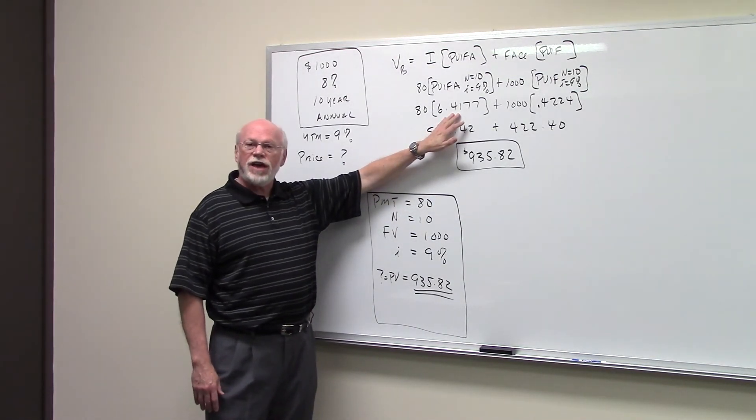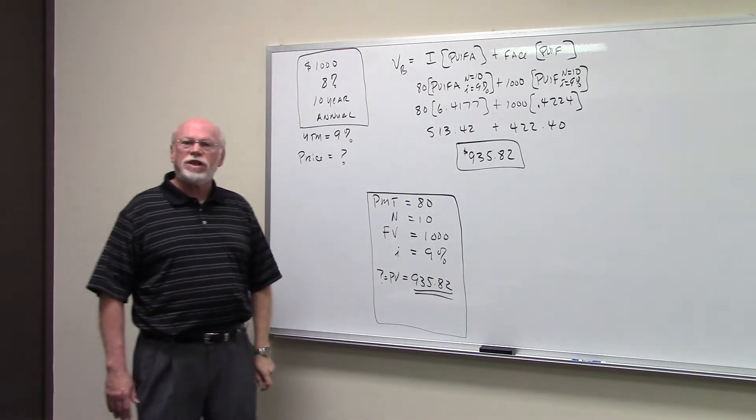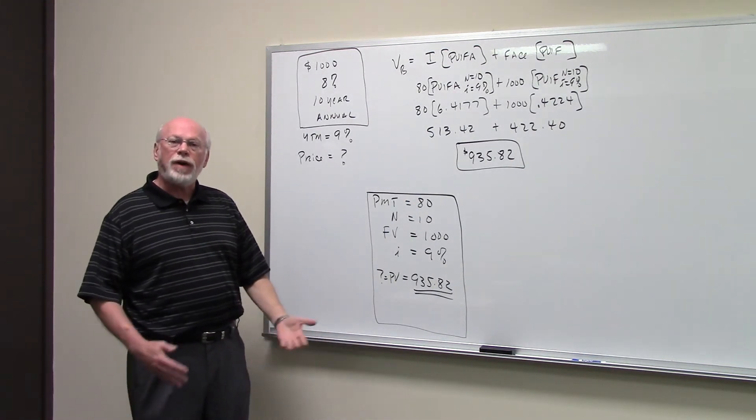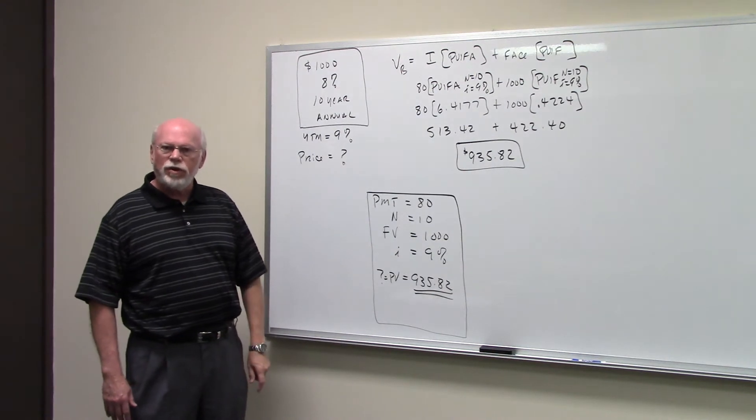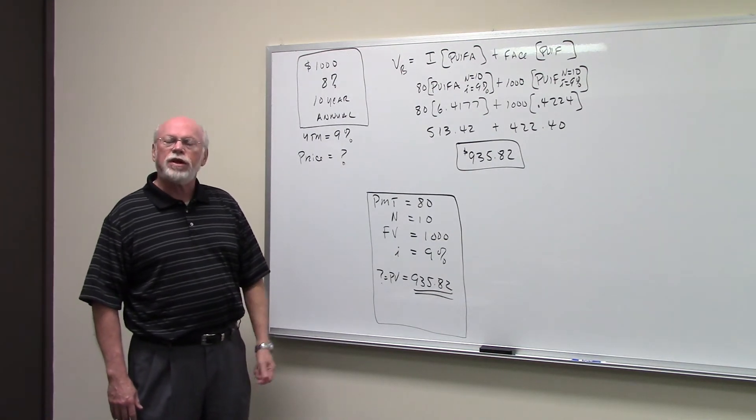The PVIF for the annuity is 6.4177. Multiply that by $80. The value of the annuity, the present value of the annuity, is $513.42.